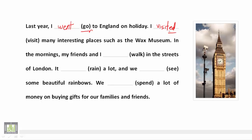I visited many interesting places such as the Woksi Museum. In the mornings, my friends and I walked in the streets of London — 'walked' is also a regular verb. It rained a lot — here we have an irregular verb — فعل غير قياسي — and we saw some beautiful rainbows. We also spent a lot of money on buying gifts for our families and friends.